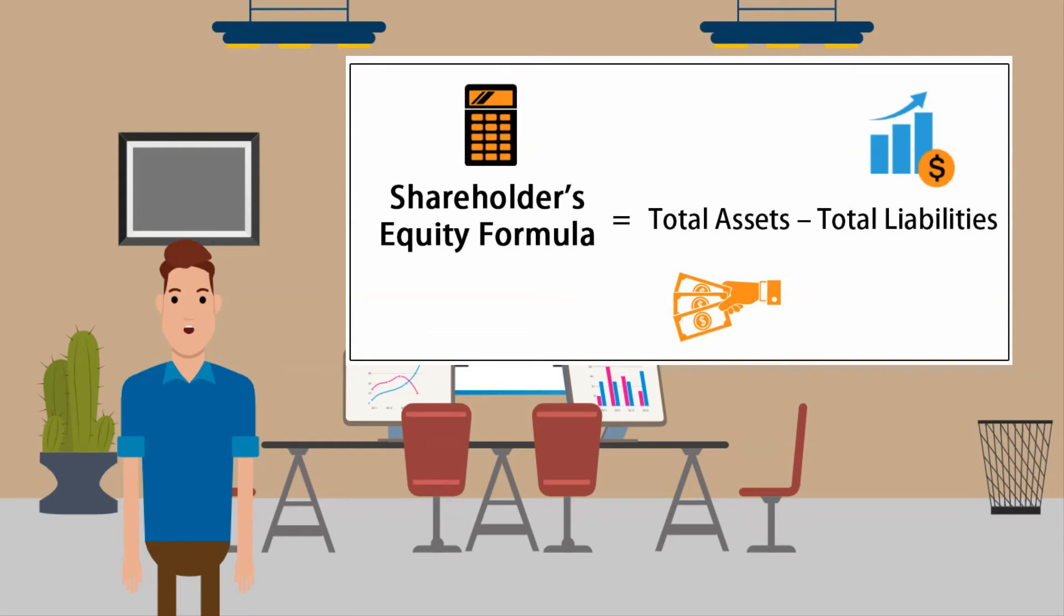Shareholders' equity is the total amount of money invested in the company by shareholders. This will include both the share capital that has been invested directly by shareholders, and also reserves - things like retained earnings and general reserves. Shareholders can see if their stake in the business has risen or fallen by looking at the total equity figure on the balance sheet.